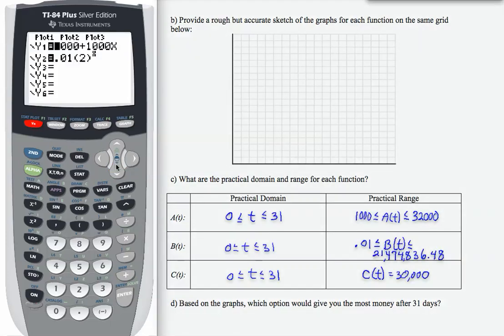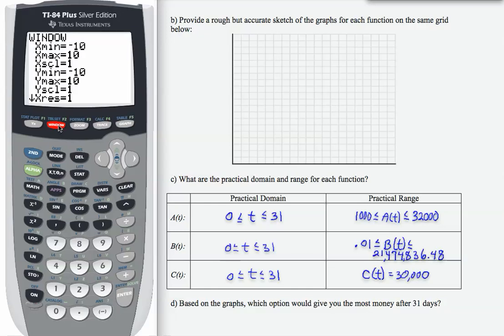So let me go to Y equals now, and let me be sure that for Y3, I have entered option C, which was the 30,000. And then I need to go to my window. The window is going to be tough for this problem because there's such a big difference in outputs for option B.